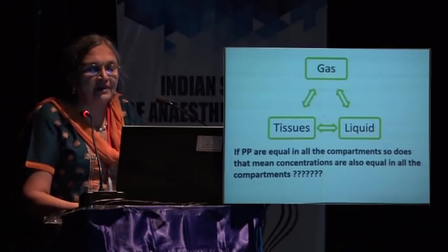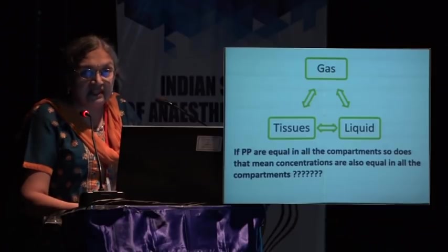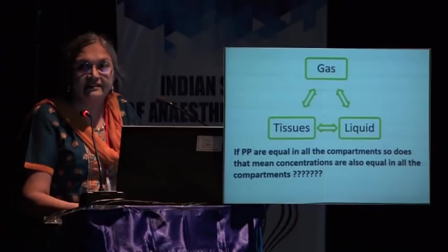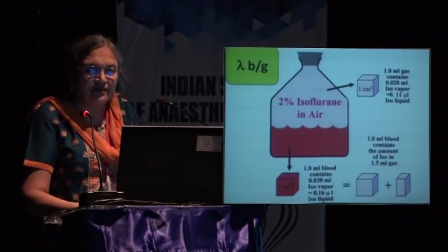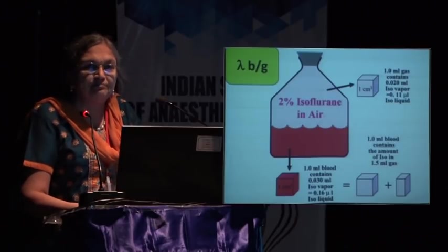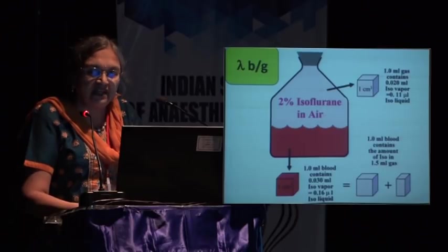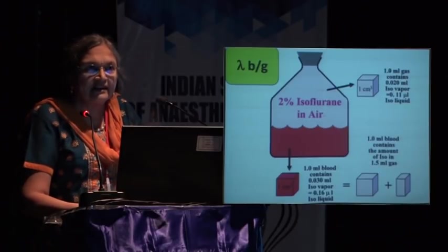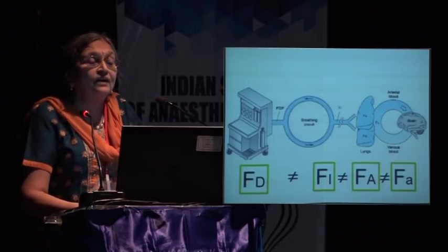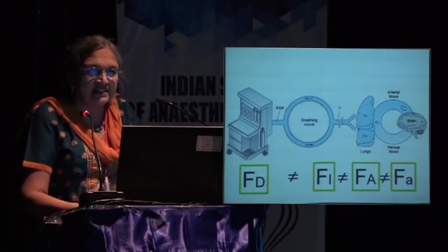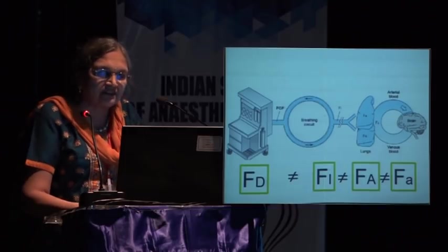Does equal partial pressure in all compartments mean equal concentrations? No. For example, 1 ml of gas may contain 0.020 ml of isoflurane, whereas blood's higher gas solubility means 1 ml of blood contains 0.030 ml of isoflurane — equivalent to 1.5 ml of air. Therefore, arterial concentration is not equal to alveolar concentration, which is not equal to inspired concentration, which is not equal to delivered concentration.